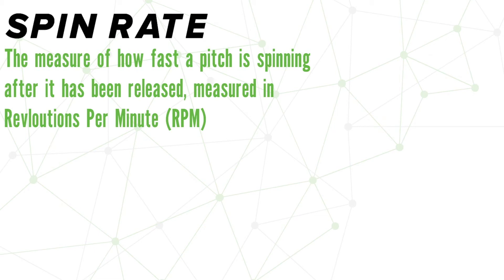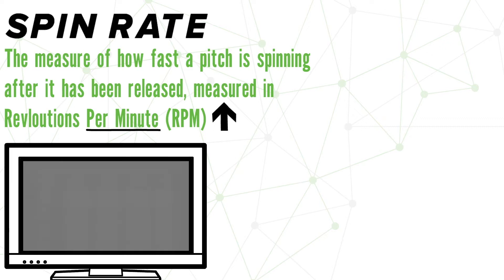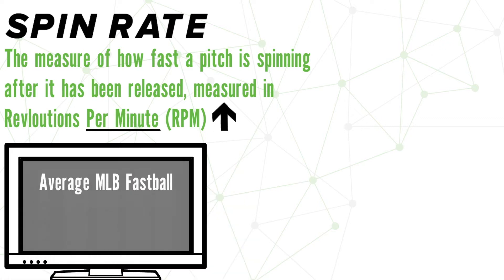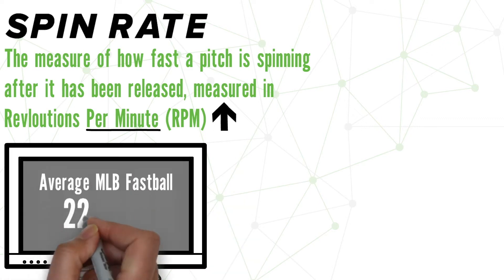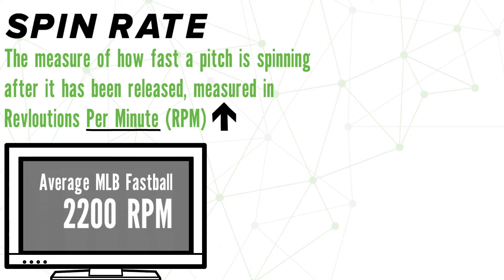Because we're measuring a pitch that happens in a fraction of a second with a metric that uses minutes, our output here often sits in the thousands. To give you some perspective, the average MLB fastball has an average spin rate of around 2200 revolutions per minute, or RPM.